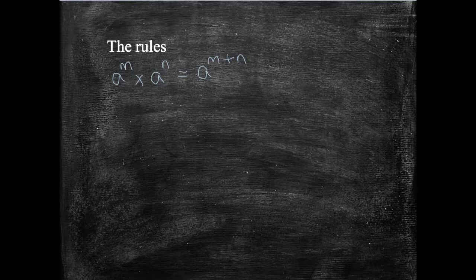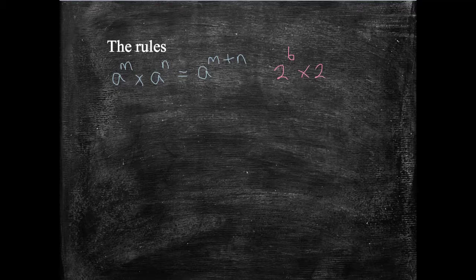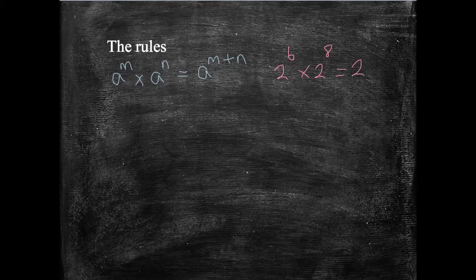If this is the case, then we add our powers. It becomes A to the M plus N. So, for example, if I've got 2 to the power of 6, multiplied by 2 to the power of 8, my answer is 2 to the power of 14. So when our bases are the same, when the number at the bottom is the same, and we're multiplying, then we add our powers.